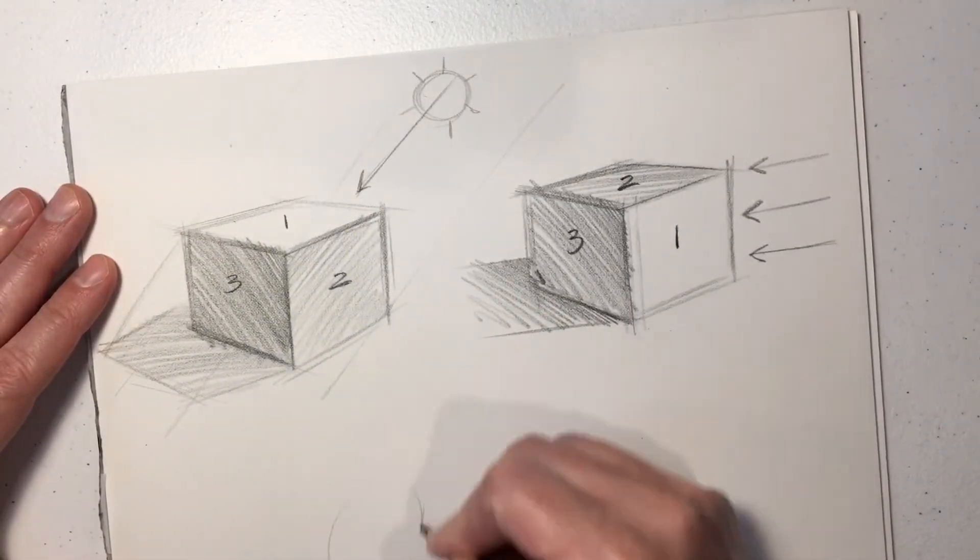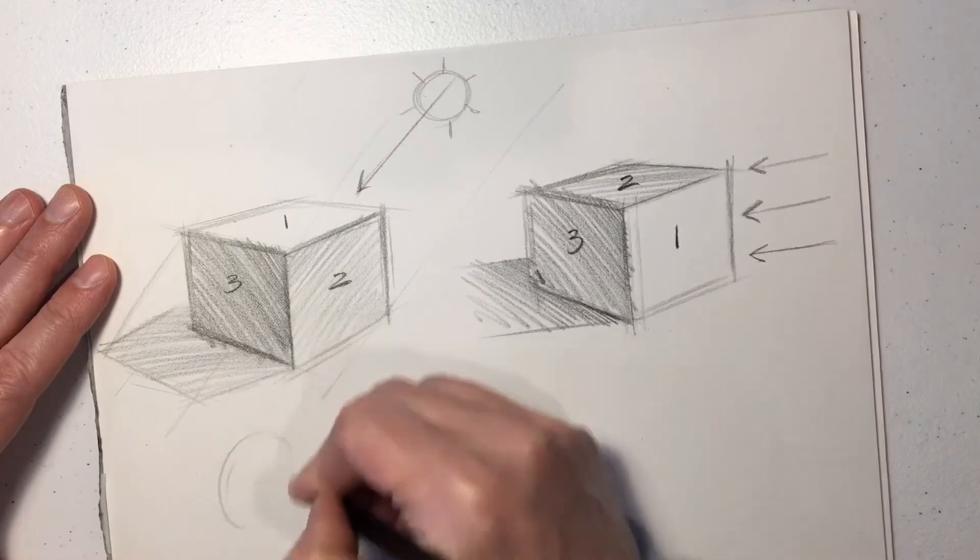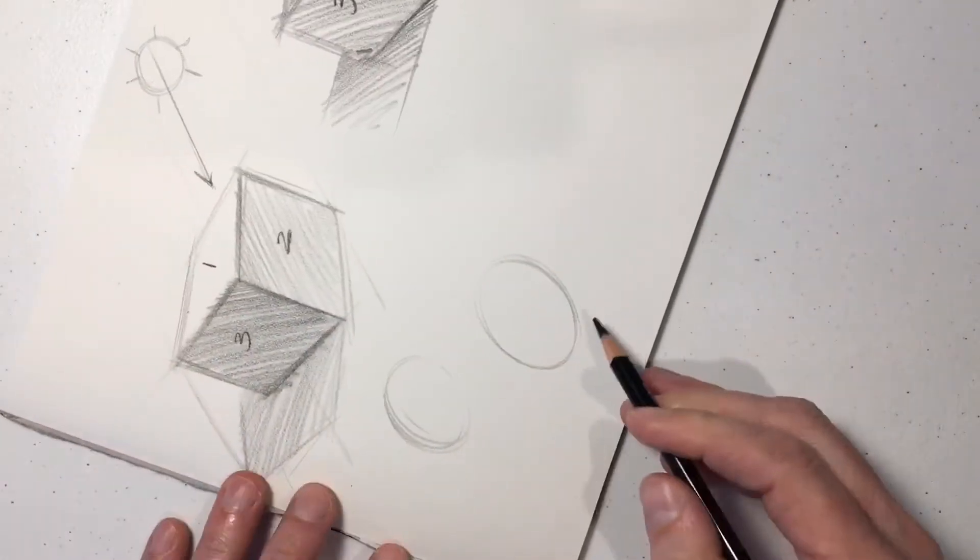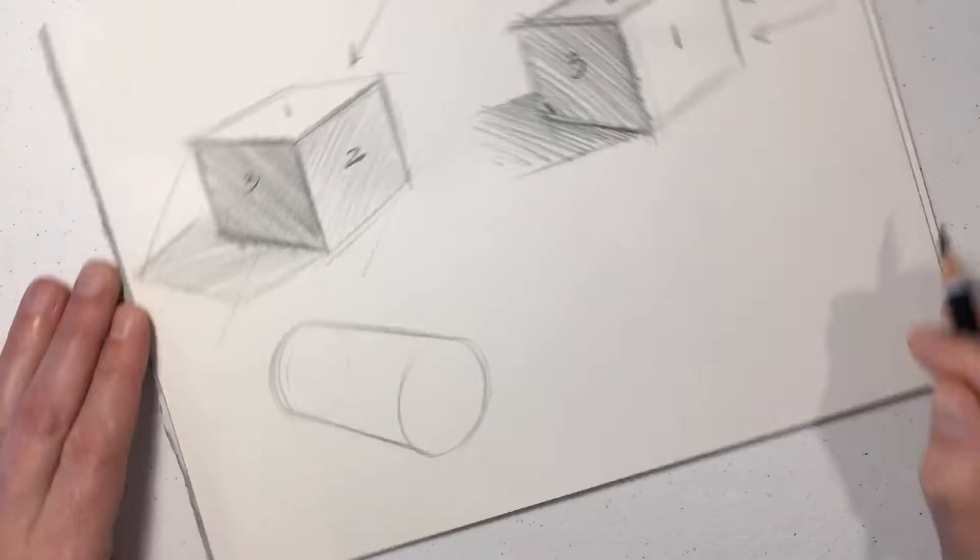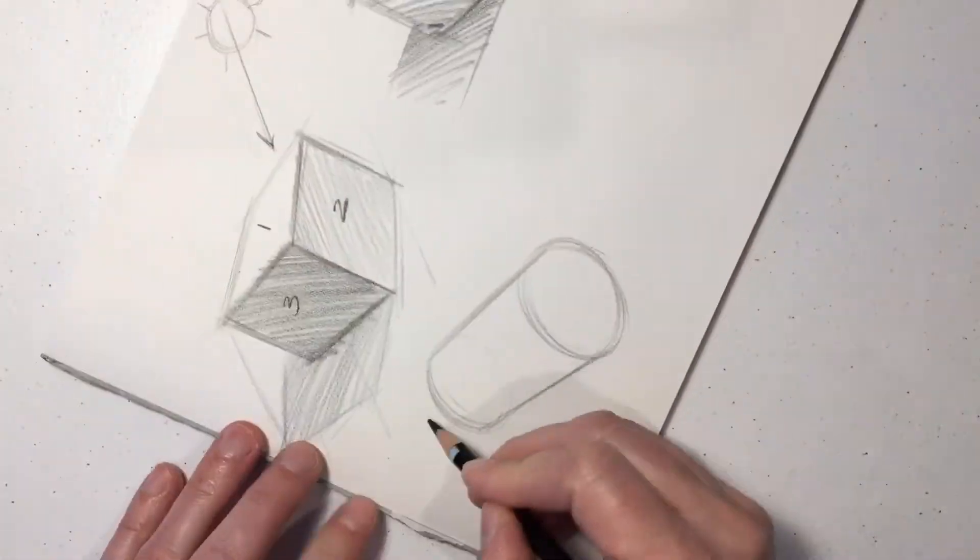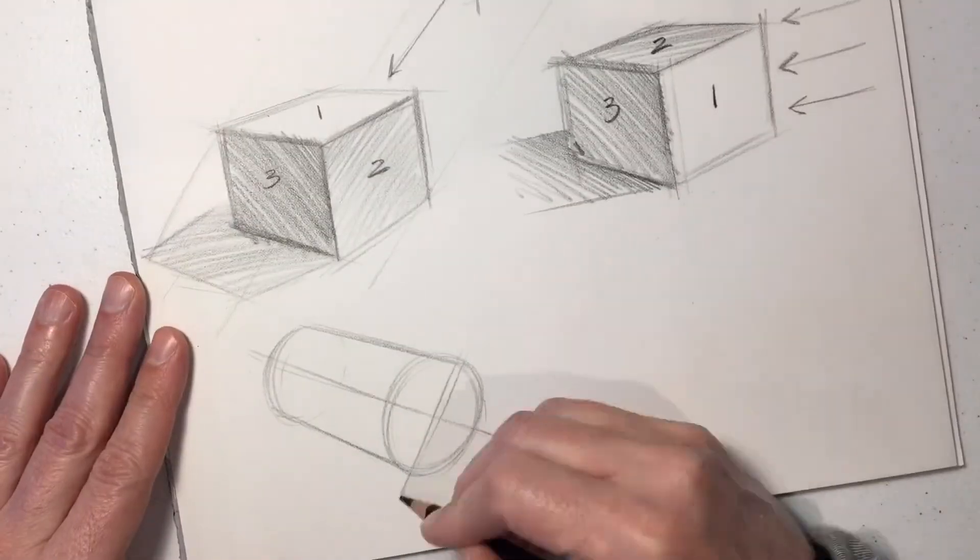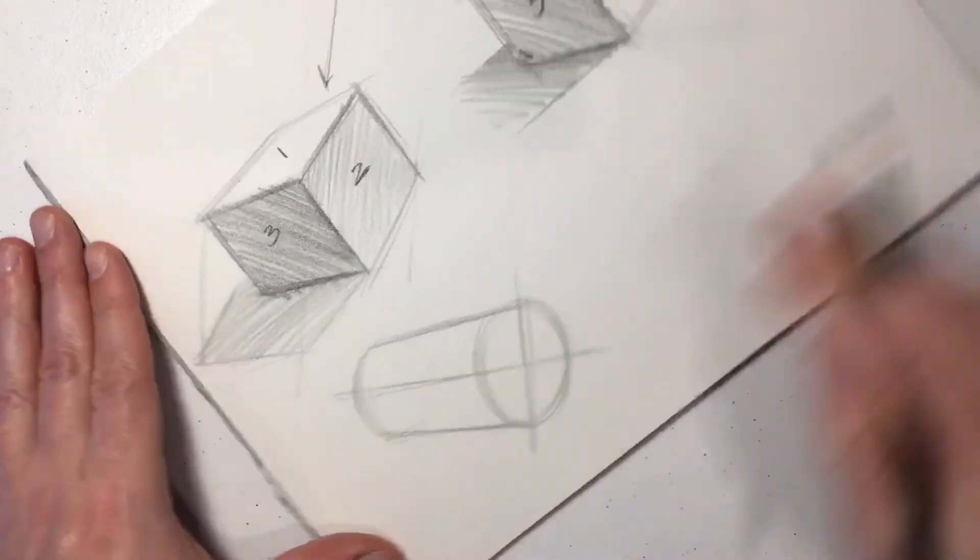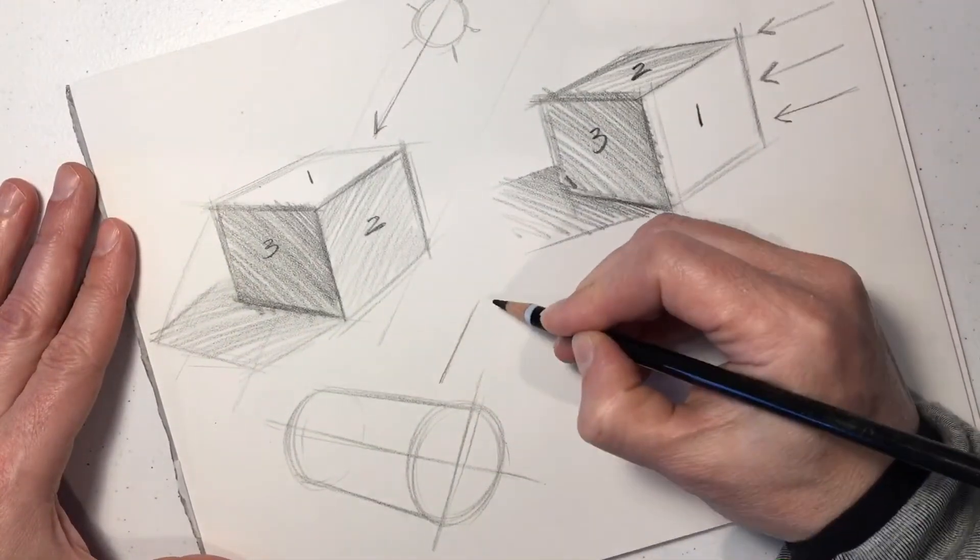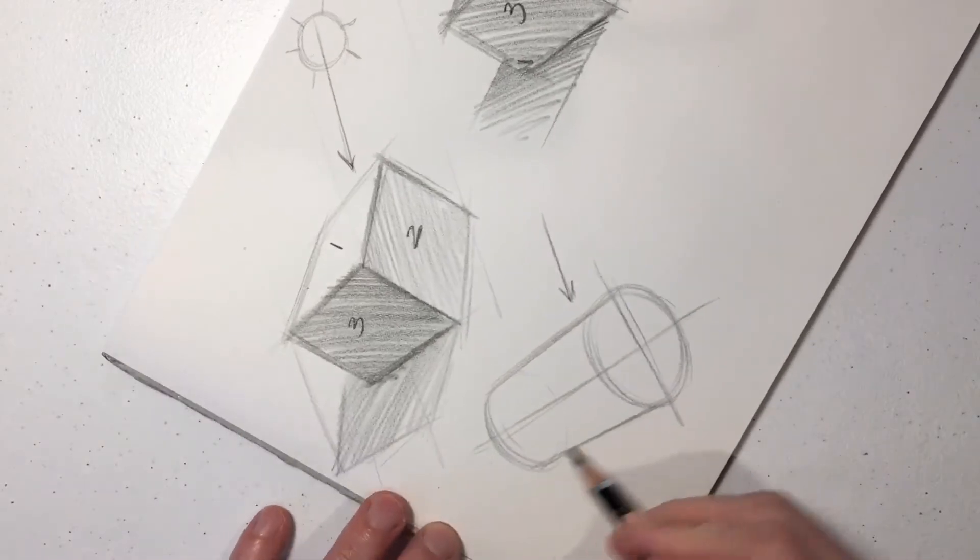So what happens if we start to look at cylinders? The same rules apply. We set up our light source—directional light that's coming from above.